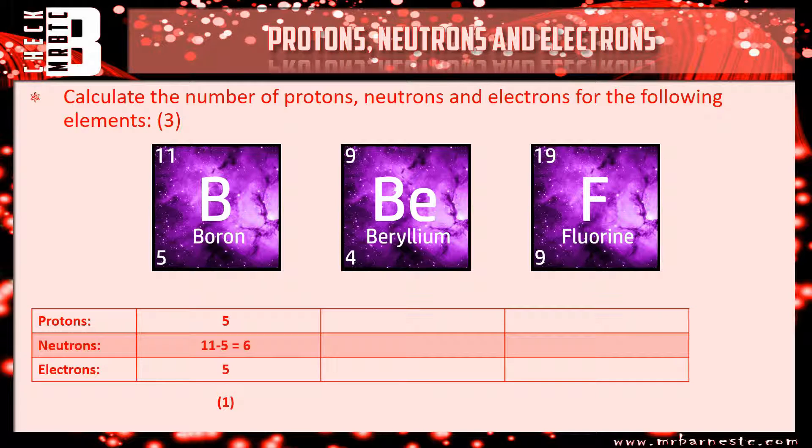Beryllium, bottom number, 4, so that's your protons and electrons. Your neutrons, 9 take away 4 is 5. One mark for that one.